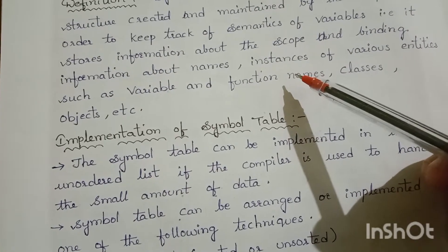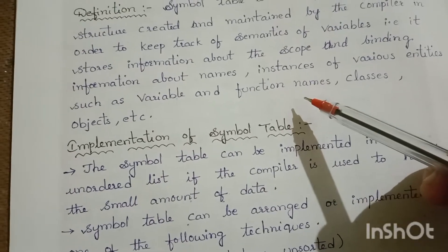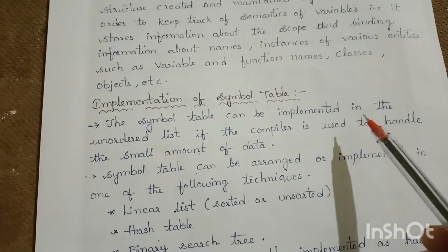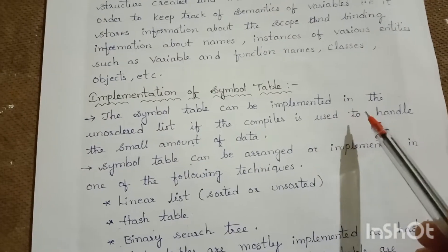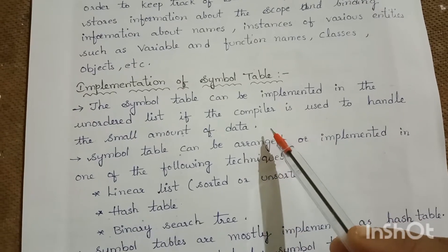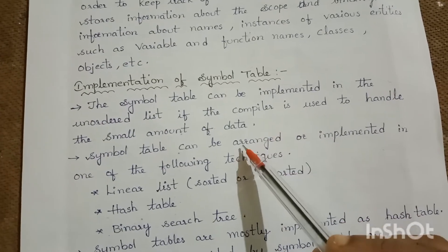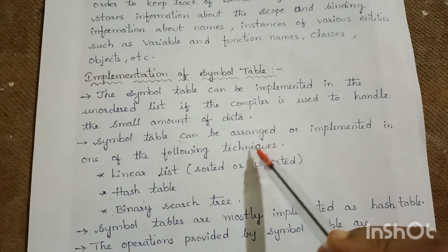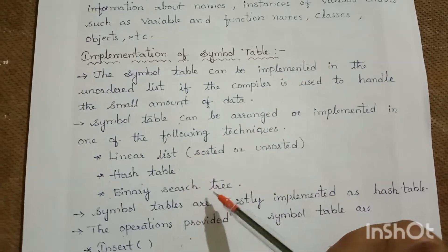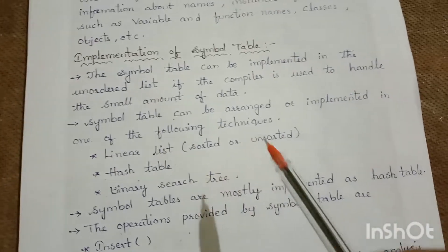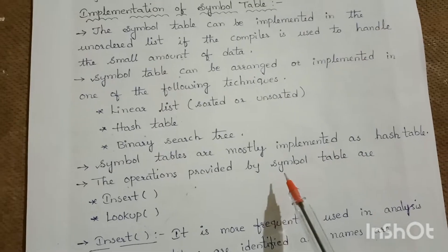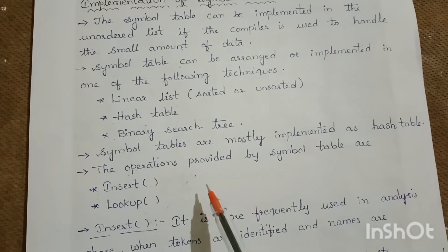The symbol table keeps information about different entities like variables, function names, classes, and objects. It can be implemented as an unordered list if the compiler handles a small amount of data, or using one of the following techniques: linear list, hash table, or binary search tree. Symbol tables are mostly implemented as hash tables.